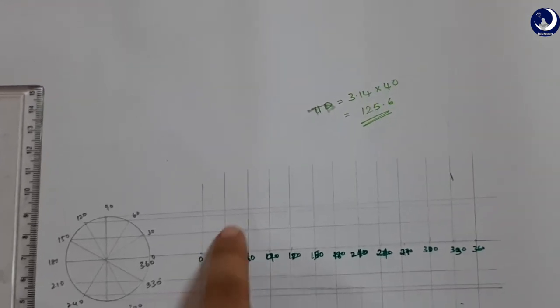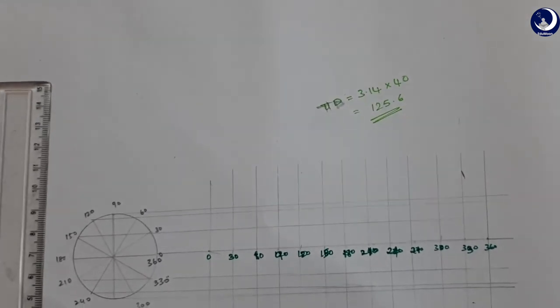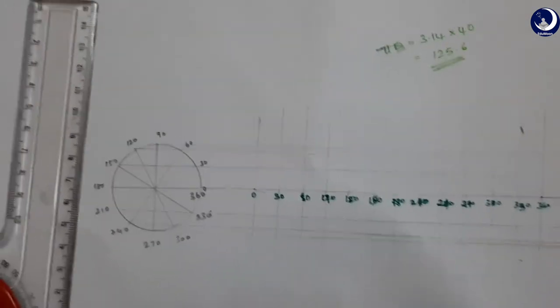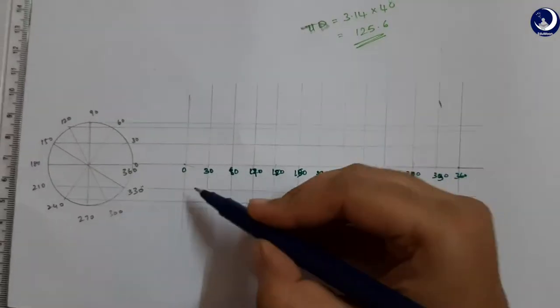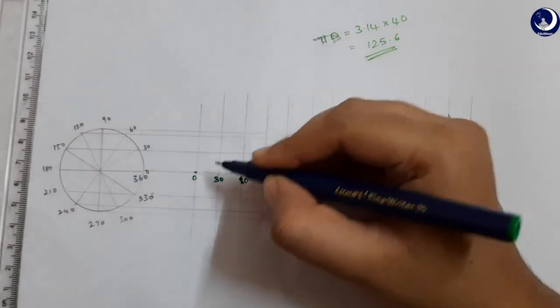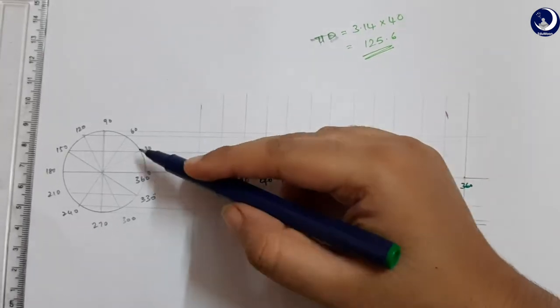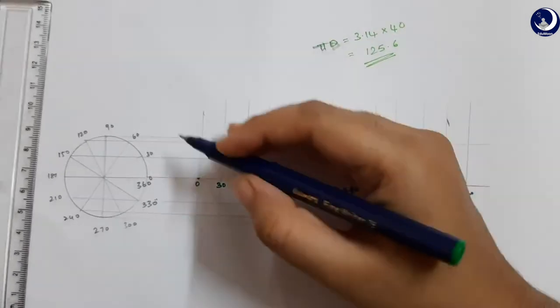You have to mark those points. I will show you how. So for 0, this is the first point. For 30, this is the point.